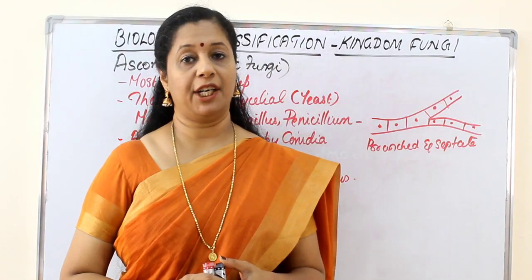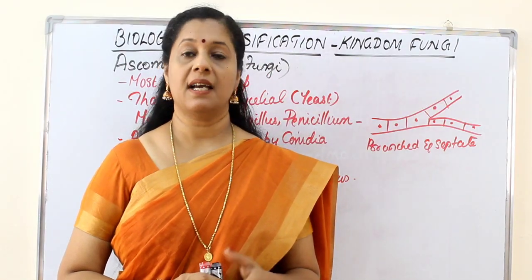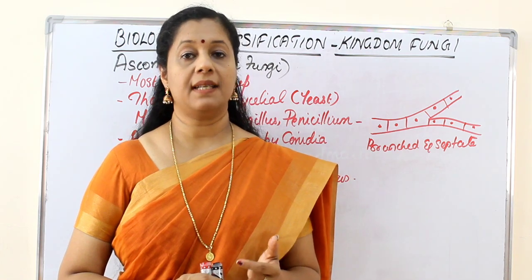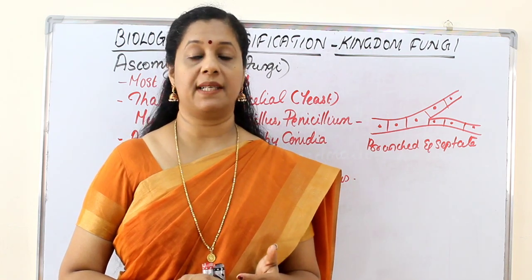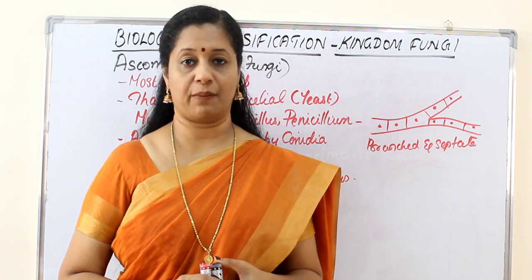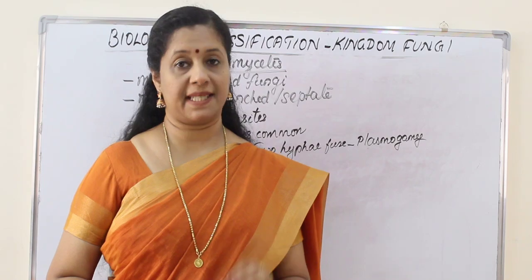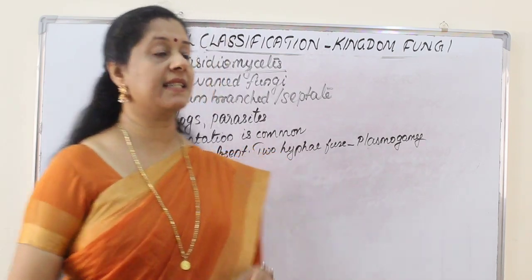Kingdom Fungi is divided into four classes: Phycomycetes, Ascomycetes, Basidiomycetes, and Deuteromycetes. Coming to the next group, class Basidiomycetes.